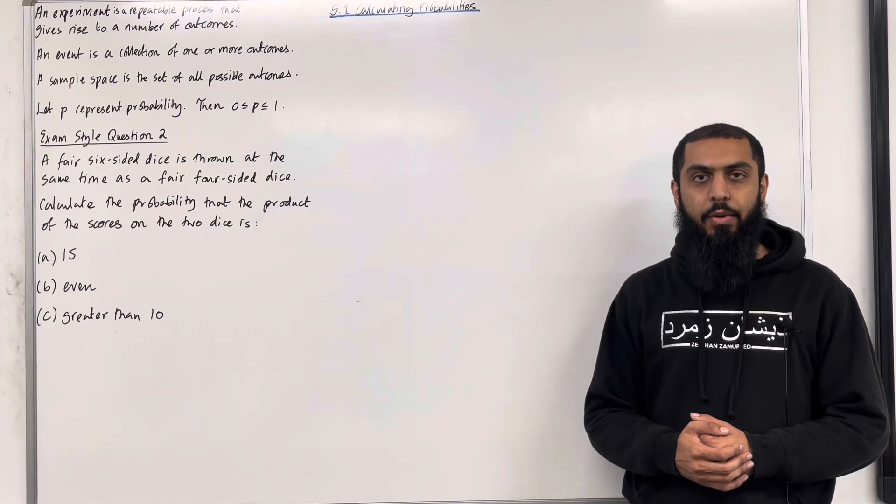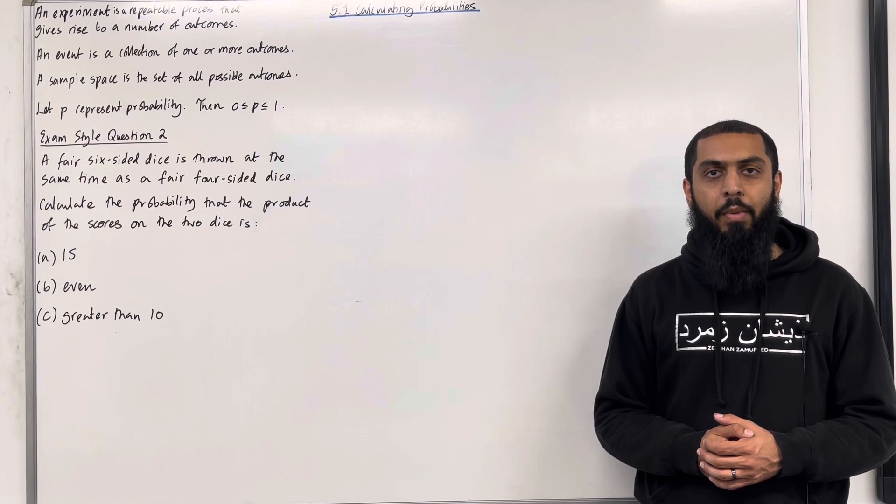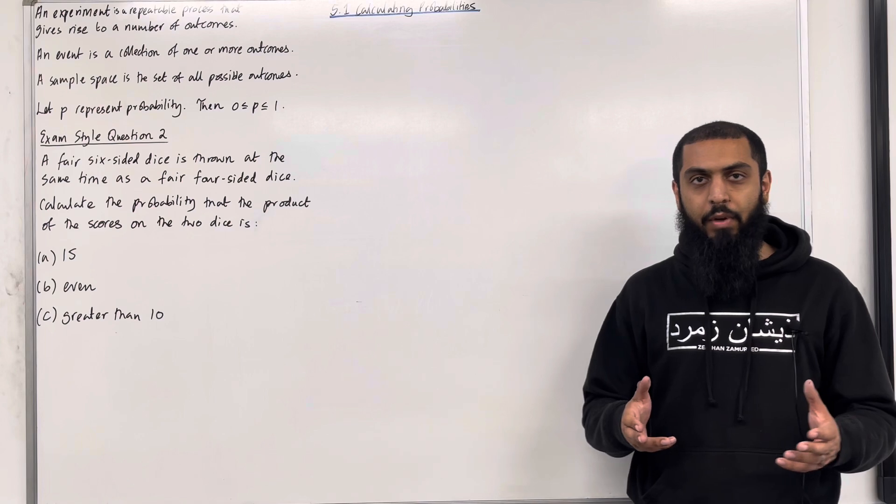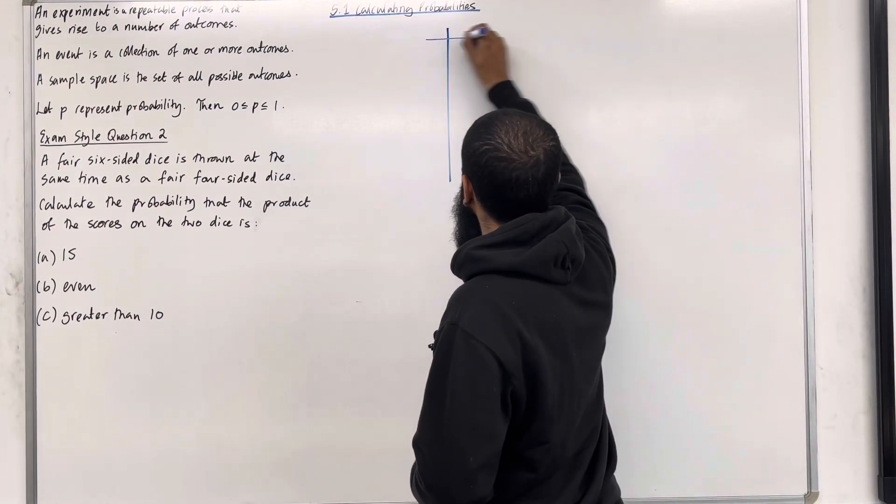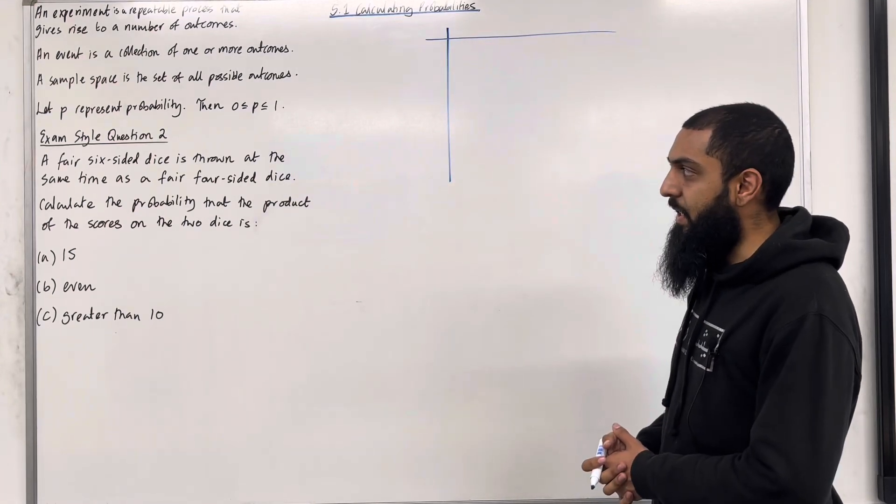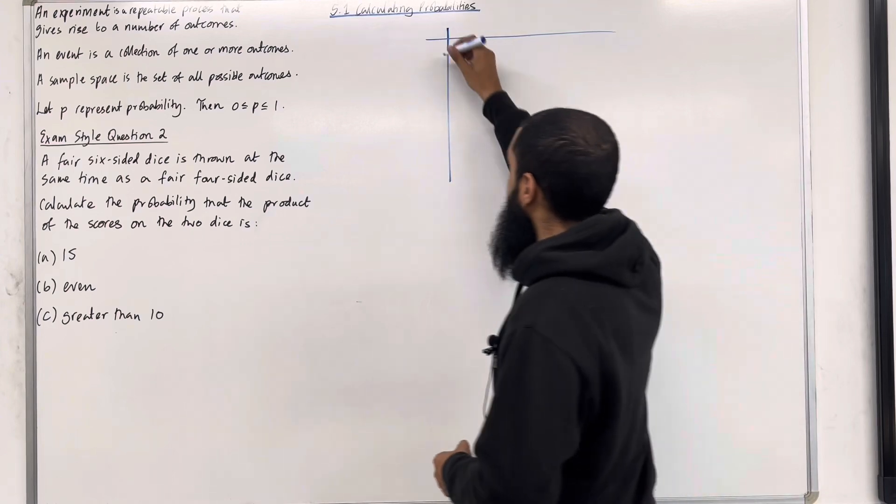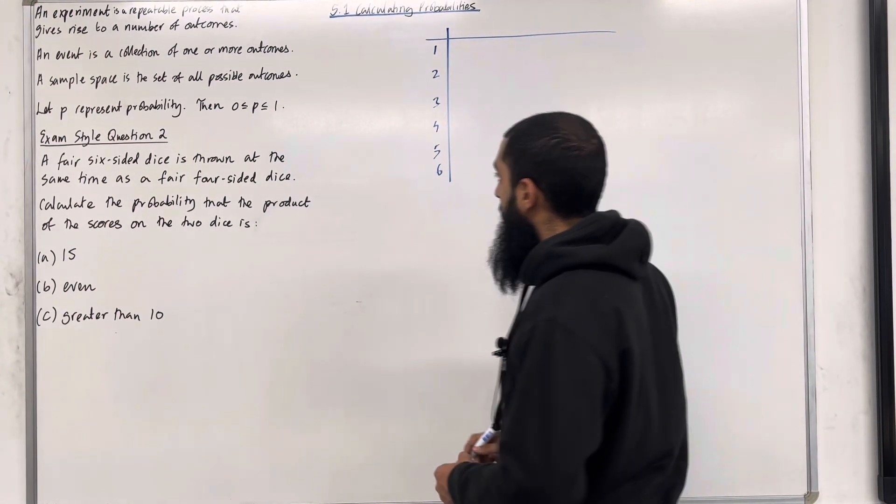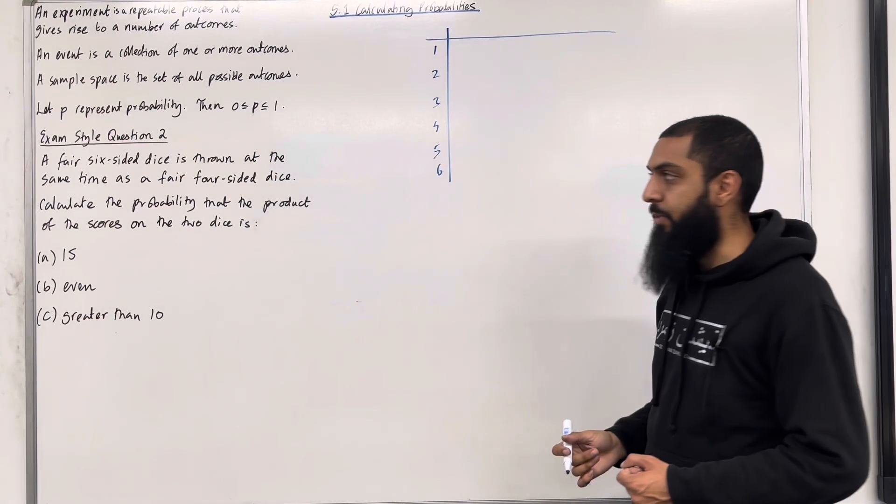Let's have a look at the solution. Like before, the very first step is to draw a sample space diagram, which includes all the possible outcomes for this experiment. Let's have a look at the sample space diagram. For the fair six-sided dice, we have scores 1, 2, 3, 4, 5, and 6. These are the possible outcomes. For the fair four-sided dice, we have scores 1, 2, 3, and 4. These are the possible outcomes.